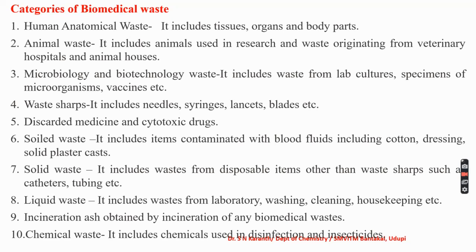The first category is human anatomical waste, which includes tissues, organs, and body parts. Then animal waste includes animals used in research and waste from veterinary hospitals and animal houses. Next is microbiology and biotechnological waste, which includes waste from lab cultures and specimens of microorganisms.